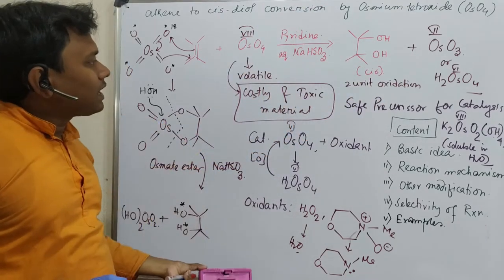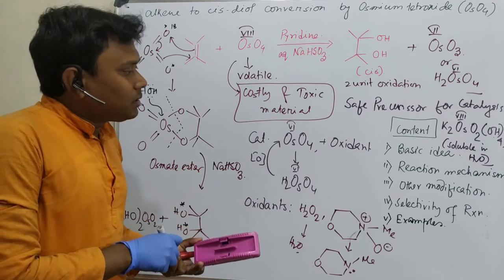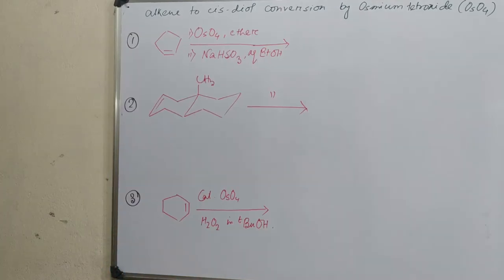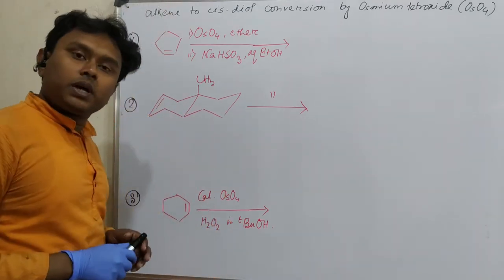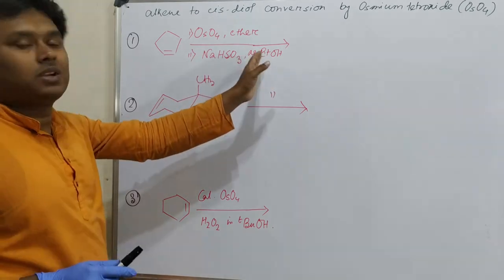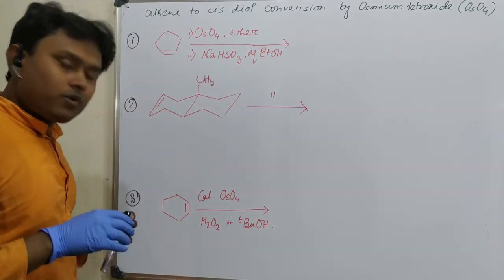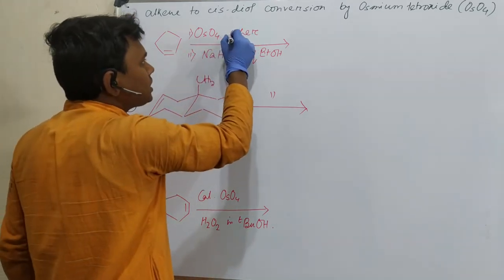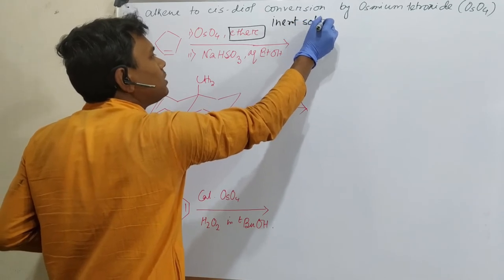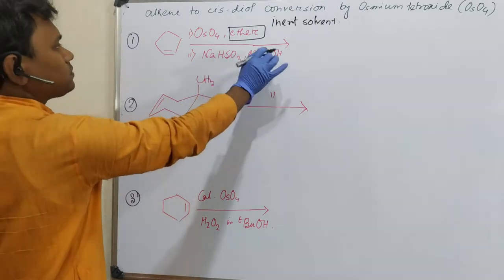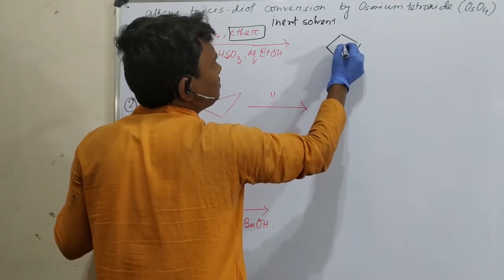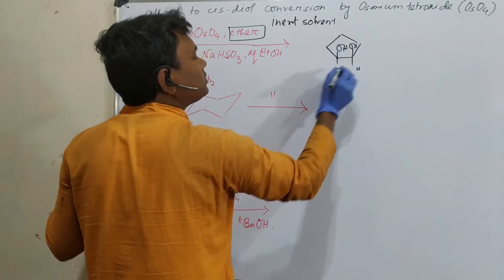Now let's discuss about the, before going to selectivity, let's discuss about few examples. So first example, see it's a cyclic alkene reacting with osmium tetroxide, ether, sodium bicarbonate, aqueous ethanol. First of all, another important thing I should mention that osmium tetroxide reactions are carried out in inert solvent, keep this term in mind, inert solvent like ether. Second, this is aqueous bicarbonate. So what it results? This results in a cis-diol, you can say up-down depending on your wish.